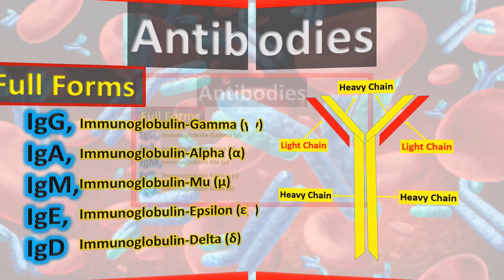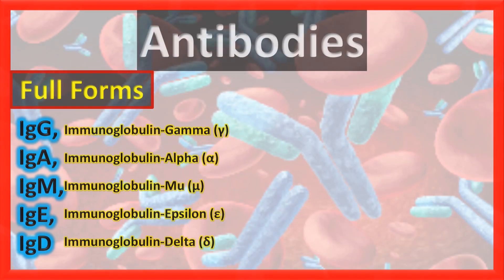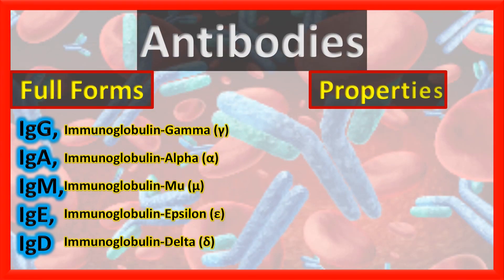Now let's have a look at the properties of antibodies which are important with respect to exams. IgG is basically a blood-borne soluble antibody, and it is the only antibody which can cross the placenta and move from the blood of the mother to the fetus.